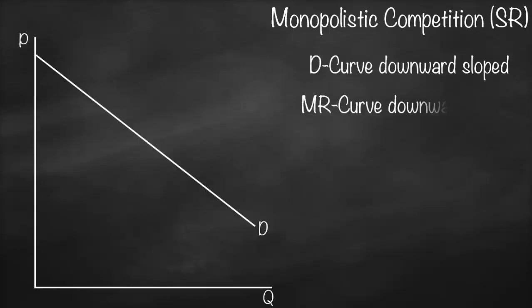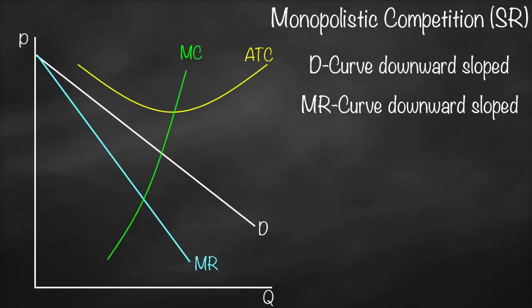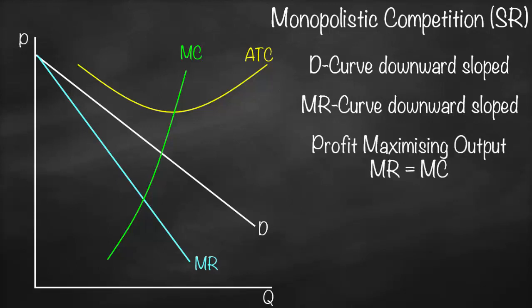In our second example of monopolistic competition, we again have a downward-sloped demand curve and a downward-sloped marginal revenue curve, a u-shaped average total cost curve, and a marginal cost curve that intersects average total cost at its minimum.